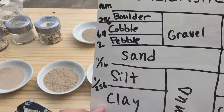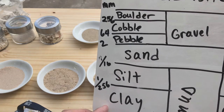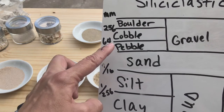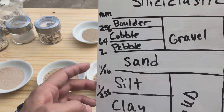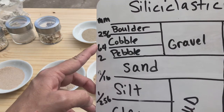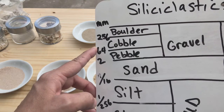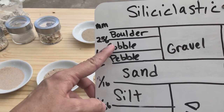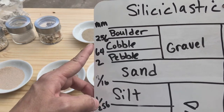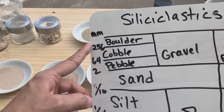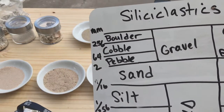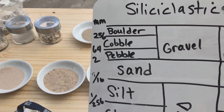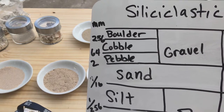Clay feels very smooth and not gritty. Silt will be somewhat gritty, and sand of course is gritty. Above sand size we get into pebble — anything between 2 and 64 millimeters, roughly the size of a baseball. Between 64 and 256 millimeters is a cobble, between a baseball and a basketball. Anything larger than 256 millimeters — larger than a basketball — is a boulder, with no upper limit.